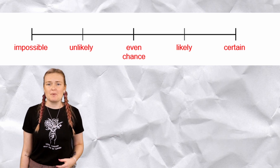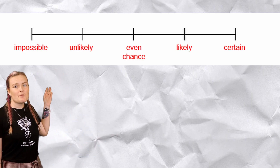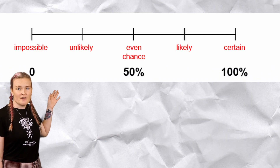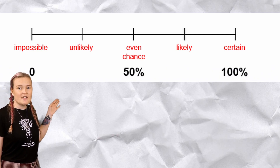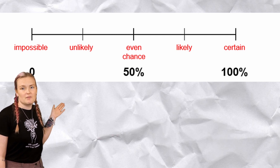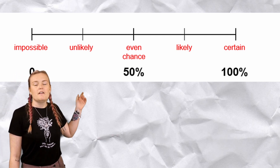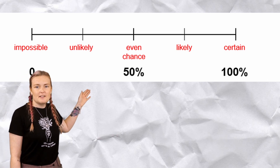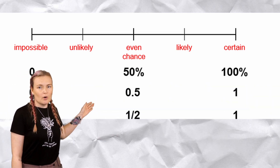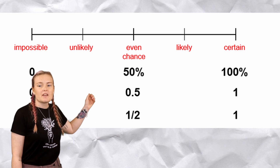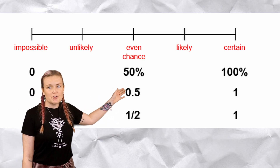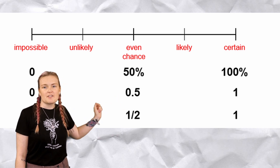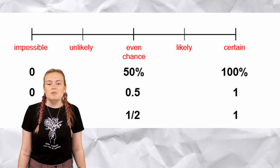Let's put some numbers to this scale. For impossible, the number is zero — that's zero percent, a decimal of zero, and a fraction of zero. For even chance, it's fifty percent, or 0.5, or one half as a fraction. For certain, it's one hundred percent, a whole one, and a whole one as a fraction.